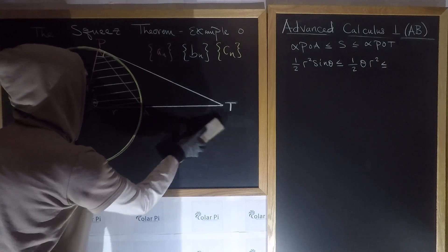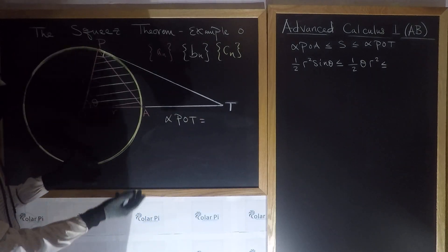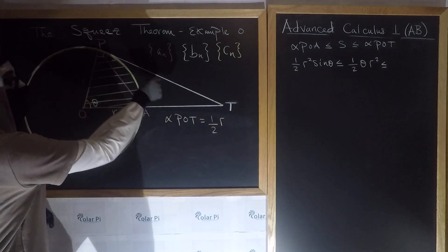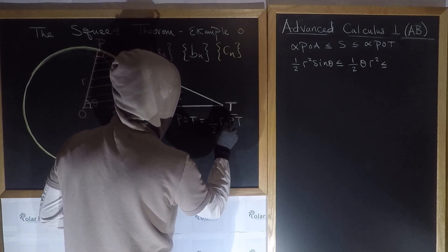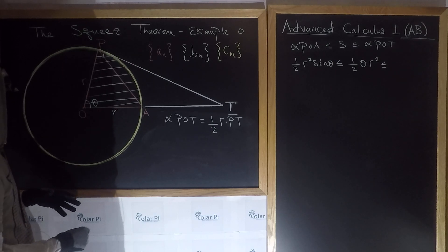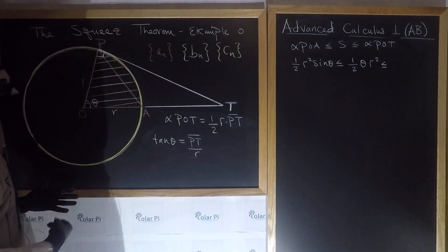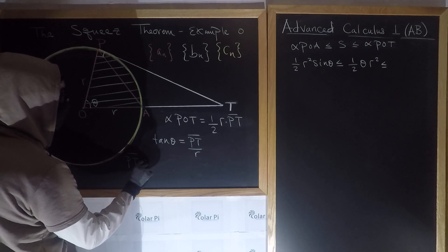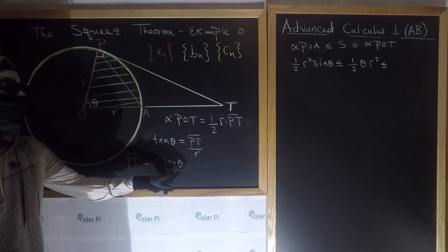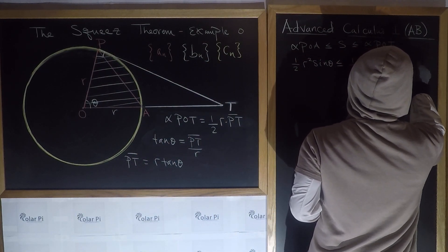Next, the area of right triangle POT. Since it's a right triangle, it's just one-half the product of the two legs. One leg is R, and the other leg is PT. To find PT, since we have a right triangle we can use trigonometry: tangent of theta equals PT over R, so PT equals R tan theta. Therefore, the area of triangle POT is one-half R times R tan theta, which is one-half R squared tan theta, or one-half R squared times sine theta over cosine theta.